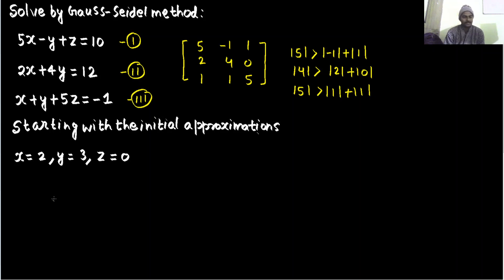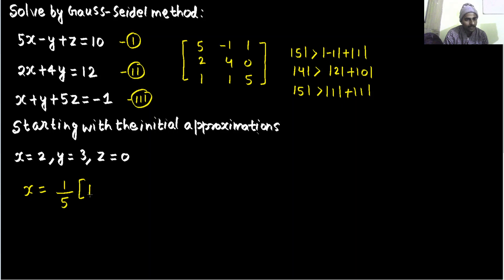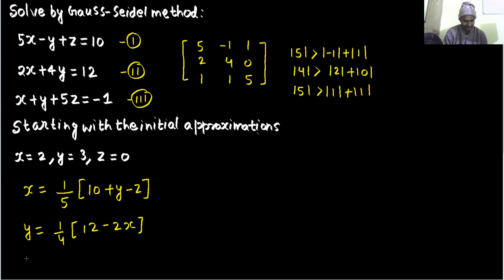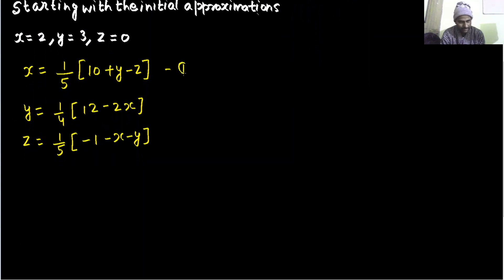Let's move to step number 2. They have already done some setup; otherwise we would have started with the initial guess of y and z as 0. The second step is: from the first equation, write x in terms of the other variables. So from the first equation, x equals 1/5 times (10 plus y minus z). From the second, y equals 1/4 times (12 minus 2x). And z equals 1/5 times (minus 1 minus x minus y). Let these be equations 1, 2, and 3.